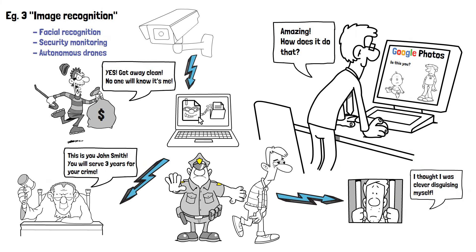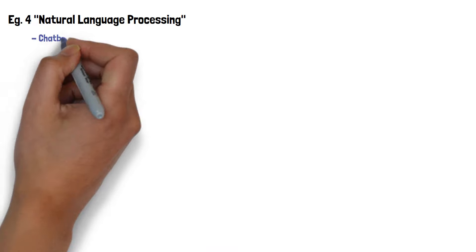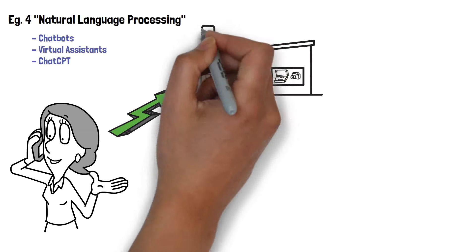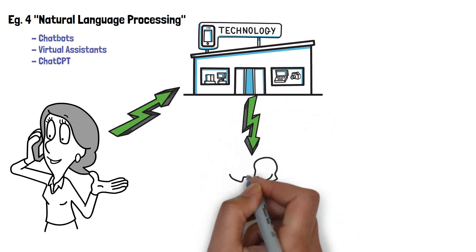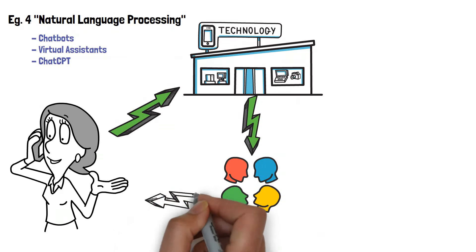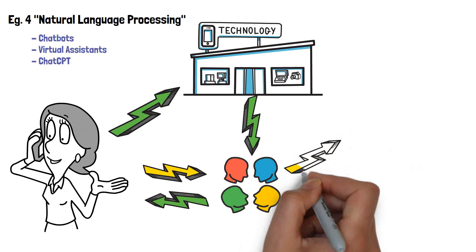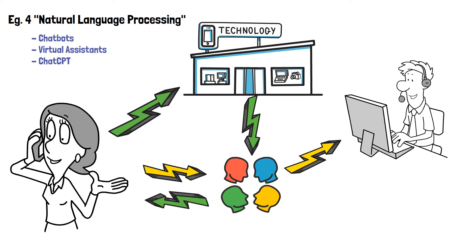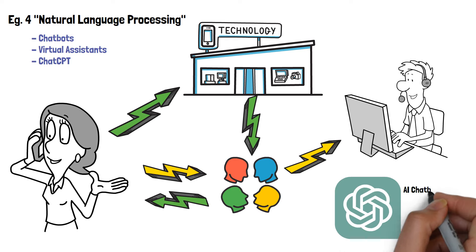Another example is natural language processing. AI-powered chatbots and virtual assistants can understand and respond to human language, allowing businesses to provide customer support and service 24-7. This also includes ChatGPT that was introduced in 2022.